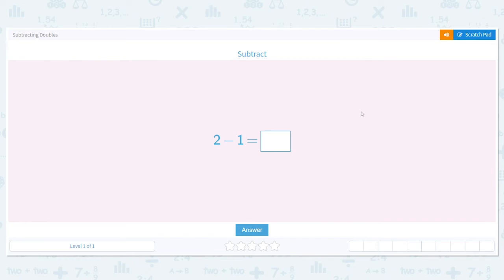All right, today we're going to practice subtracting doubles. So first question is 2 minus 1. You might be able to answer that right away, but if not, you can always draw a picture to help you solve a problem. So if I have two items and I subtract or I take away one, what do I have left? One. So 2 minus 1 equals 1.